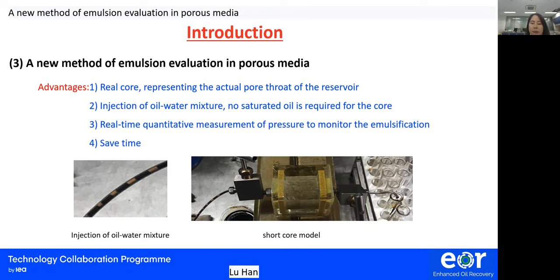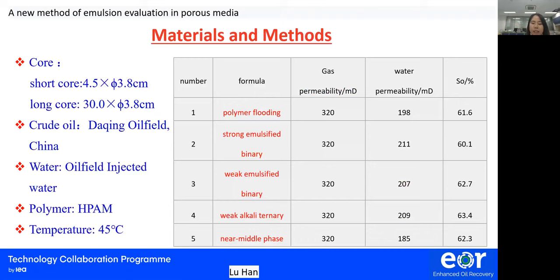The second part covers the materials and methods we used. We used epoxy resin-crusted short cores, of which the length is 4.5 cm and the diameter is 3.8 cm. In the comparison experiment, the long core is 30 cm in length and 3.8 cm in diameter. The on-site crude oil samples were obtained from Daqing oil field, China, and simulated water at the corresponding salinity was prepared. We used polymer HPAM with a molecular weight of 14 million. A series of experiments were carried out in a pilot experiment environment at 45 degrees Celsius. The table shows the relevant core parameters of the representative systems we selected.